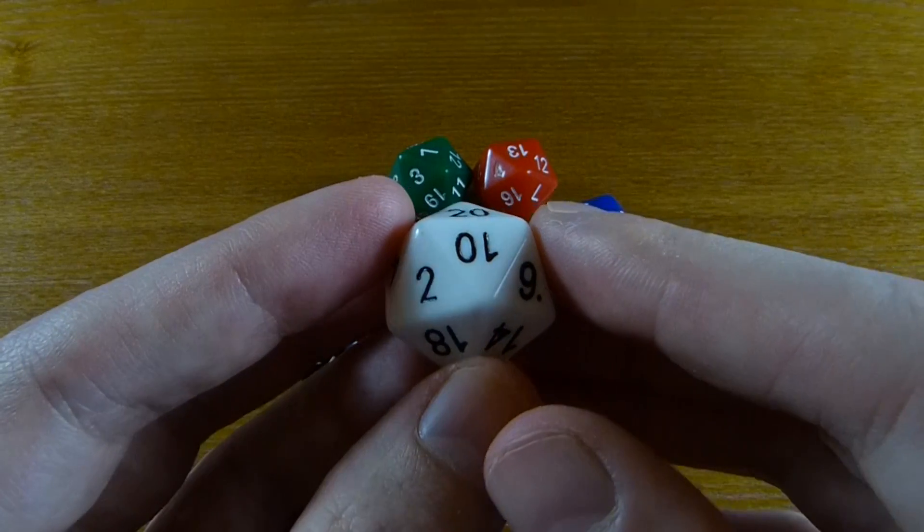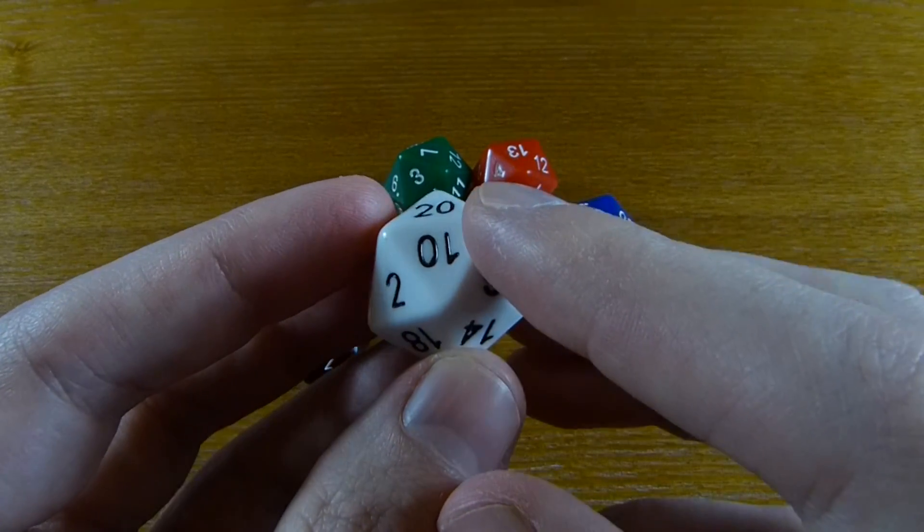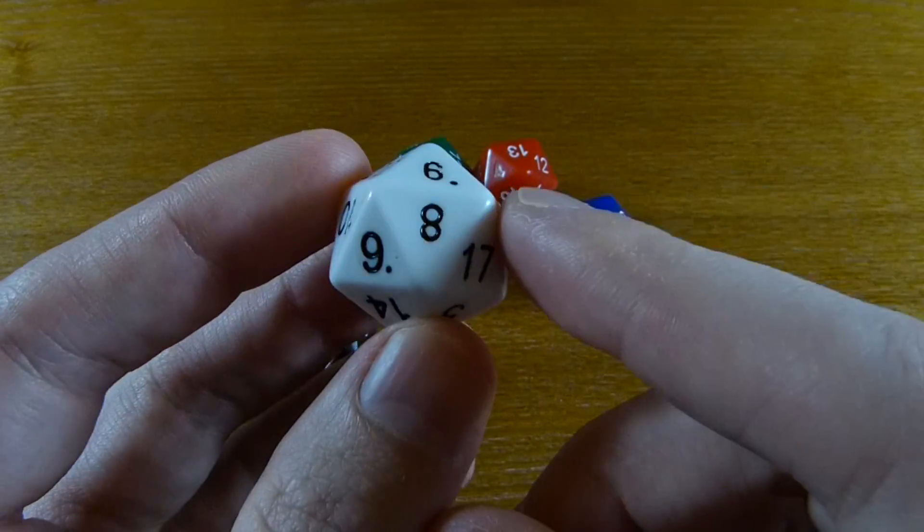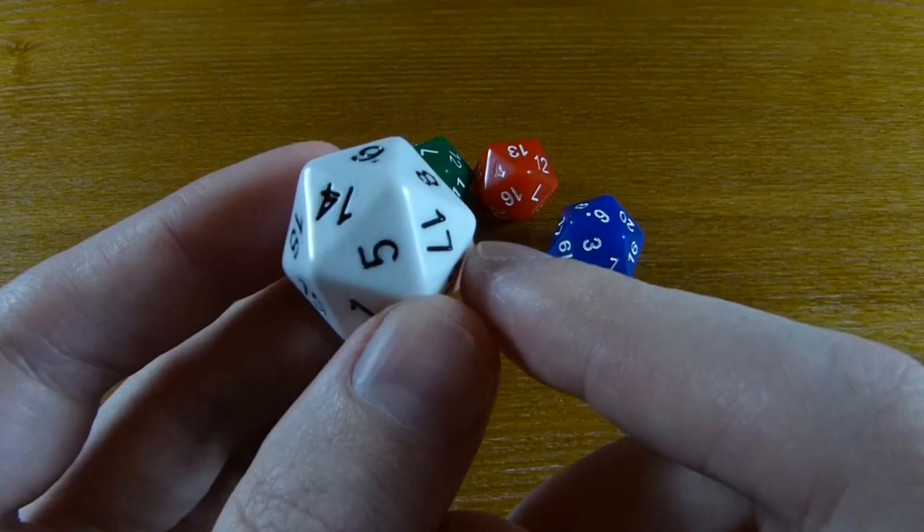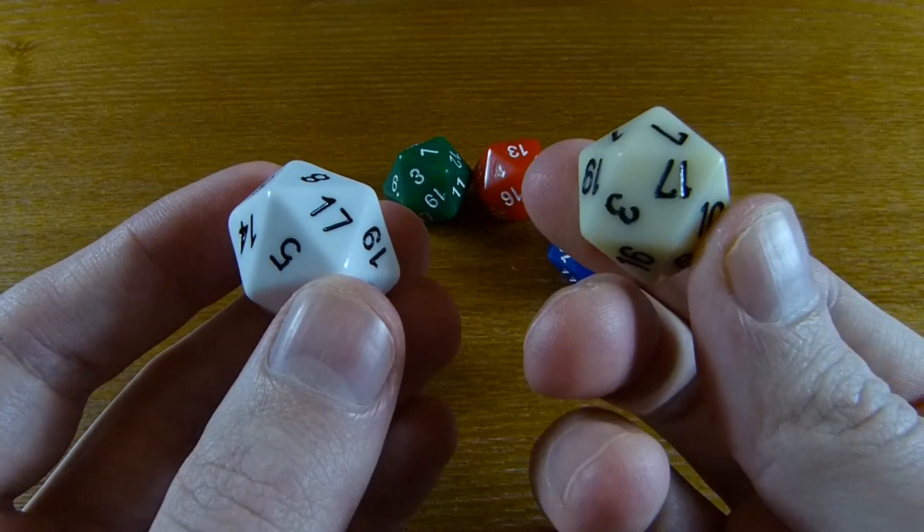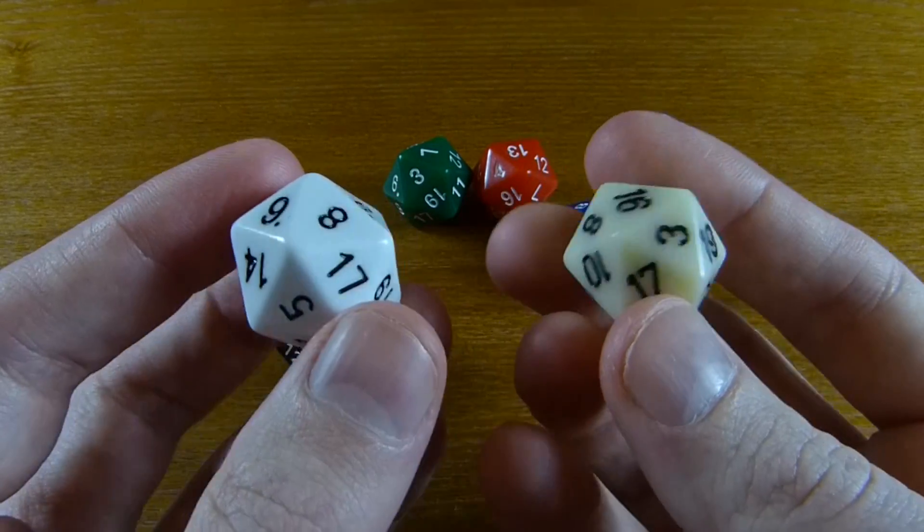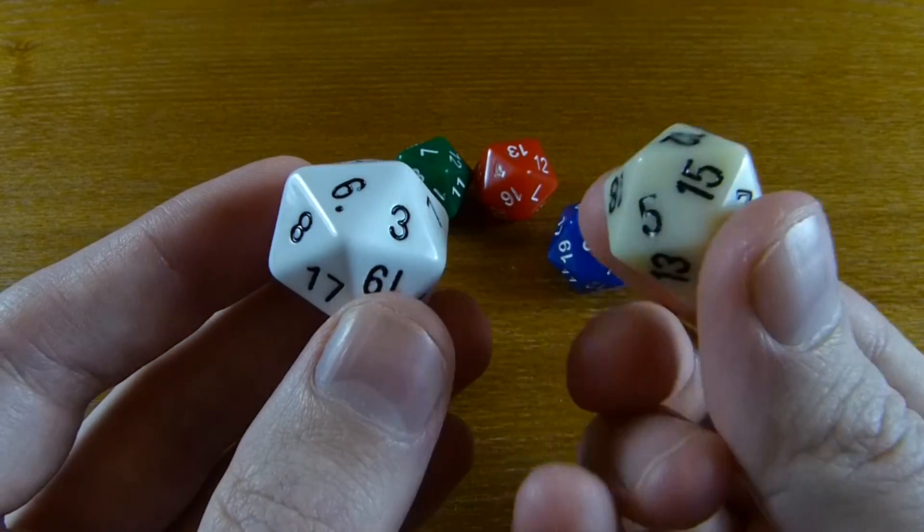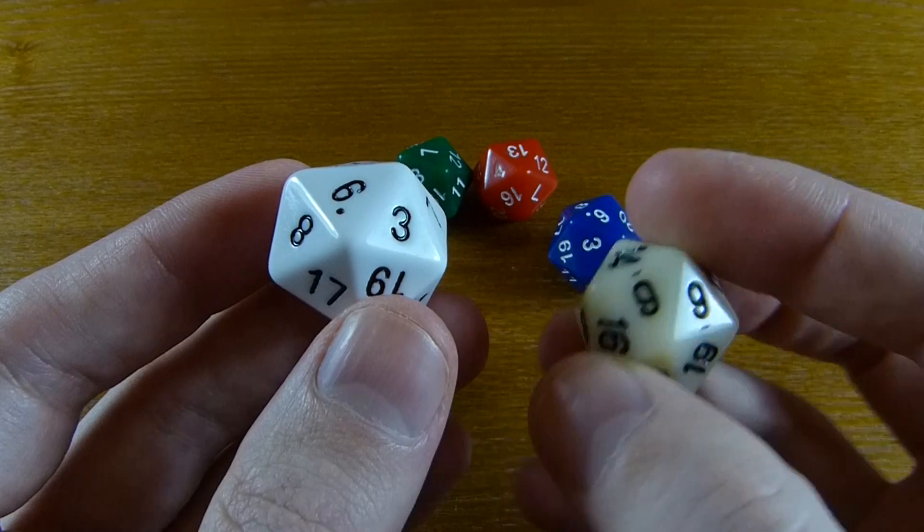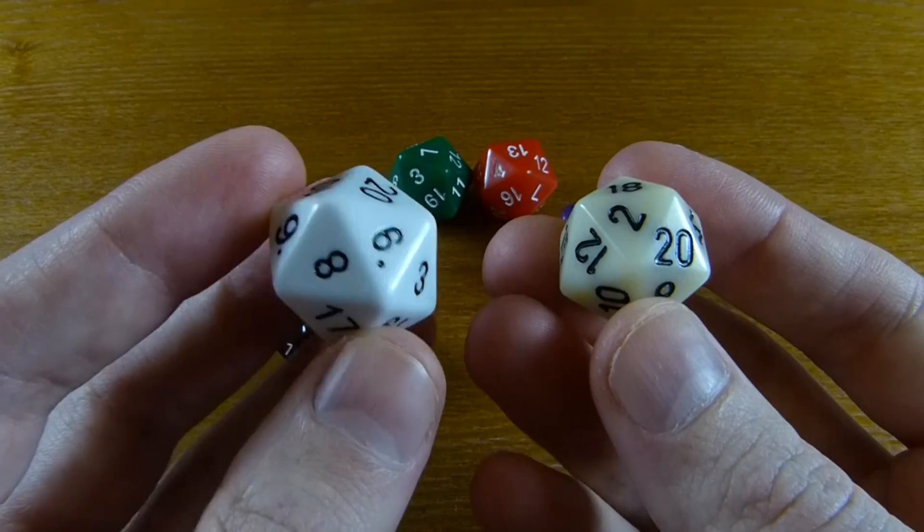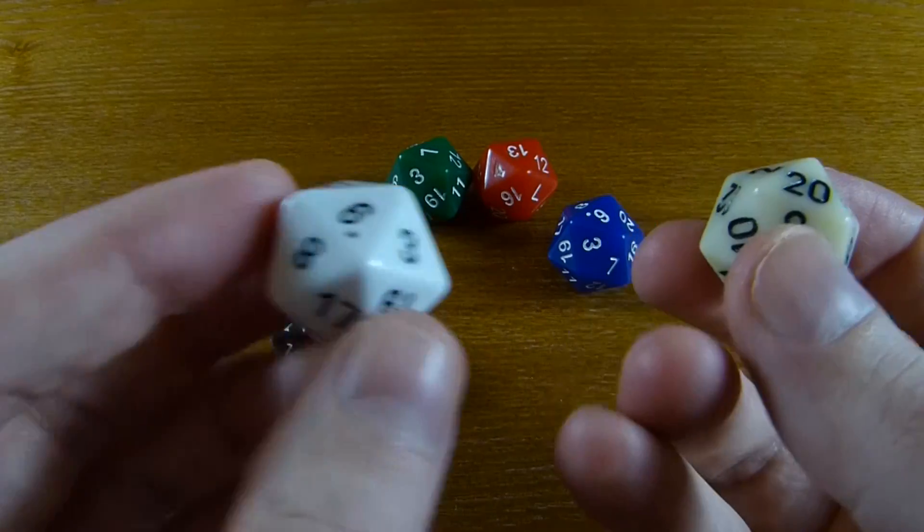Bob Bosch did the optimization calculations and computations to find a numbering which would have all these nice properties. Just to compare with the standard d20, this is a Chessex d20. Ours is a little bit bigger, but otherwise they're very similar. The Chessex d20 has opposite sides adding up to 21, but doesn't have any of the other nice properties that we have in our dice.